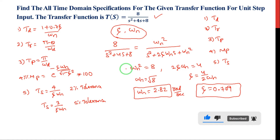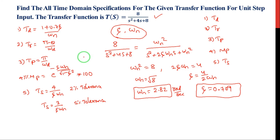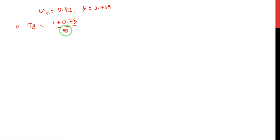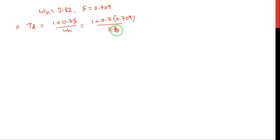Now we will calculate the specific time domain specifications: TD, TR, TP, TS and MP. With omega-n equal to 2.82 and zeta equal to 0.709, delay time TD equals 1 plus 0.7 times 0.709, divided by 2.82. The answer is 0.53 seconds.